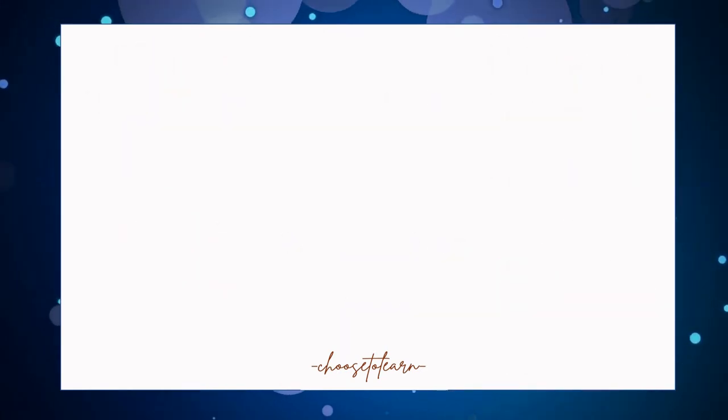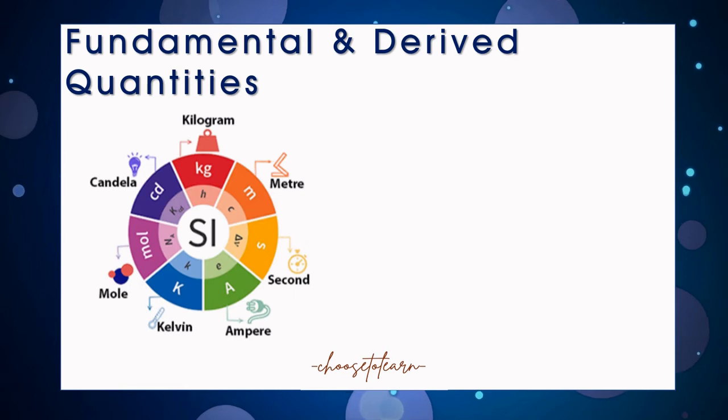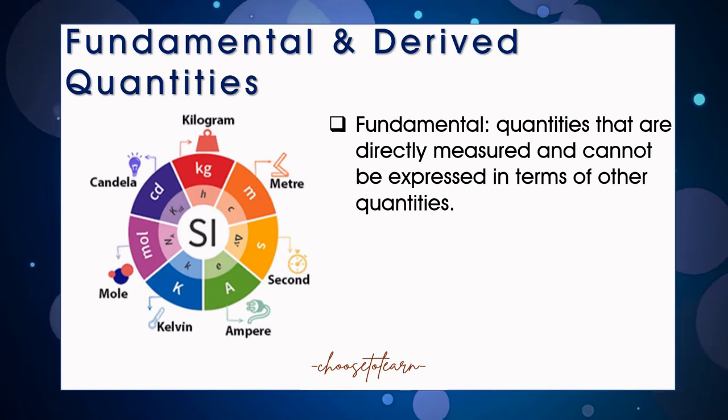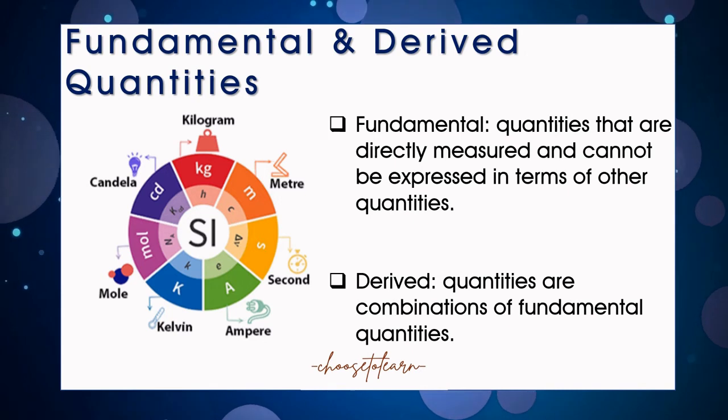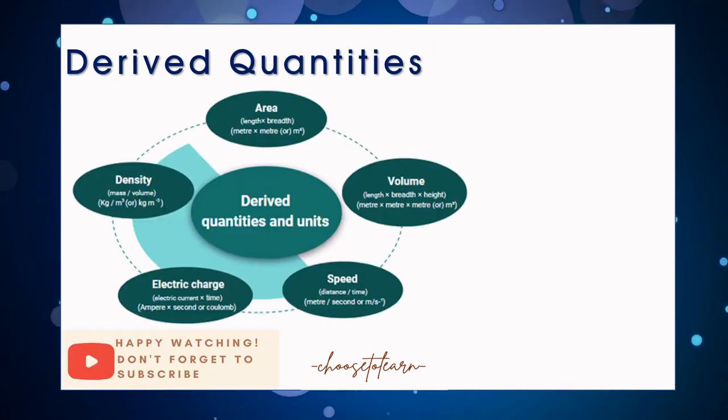These quantities are known as physical quantities. The physical quantities can be classified into two types: fundamental quantities and derived quantities. When we say fundamental quantities, these are quantities that are directly measured and cannot be expressed in terms of other quantities.